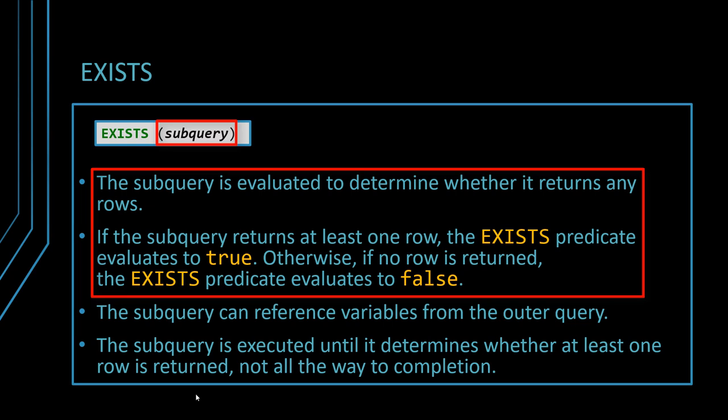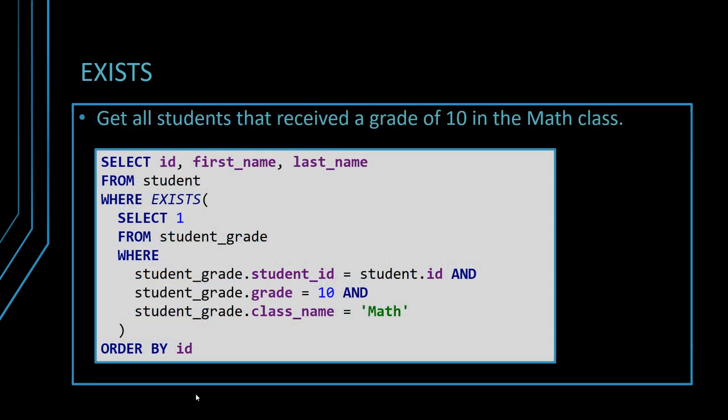If no records is being returned, like in our previous case if one student in the outer query didn't have any grade of 10, that student would be filtered out. It would not be included in the final result set. So that's basically how EXISTS works.